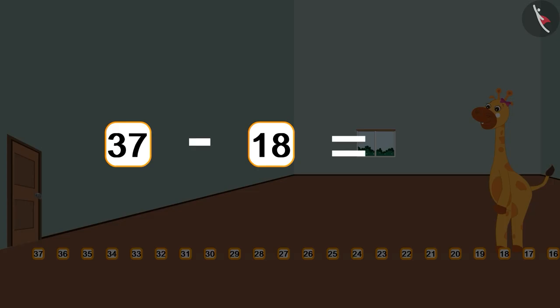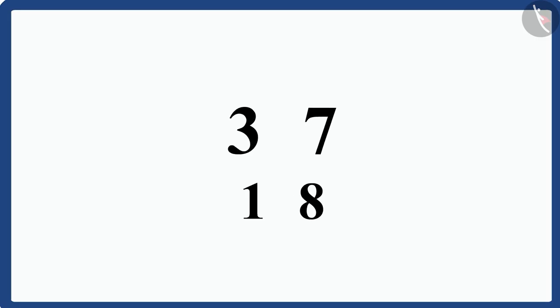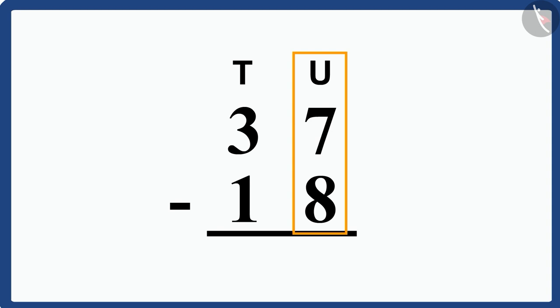We can easily find the answer using subtraction. To solve this question, we can write it in the vertical form of subtraction. We will first subtract the numbers written in the unit's place. That is, subtract 8 from 7.